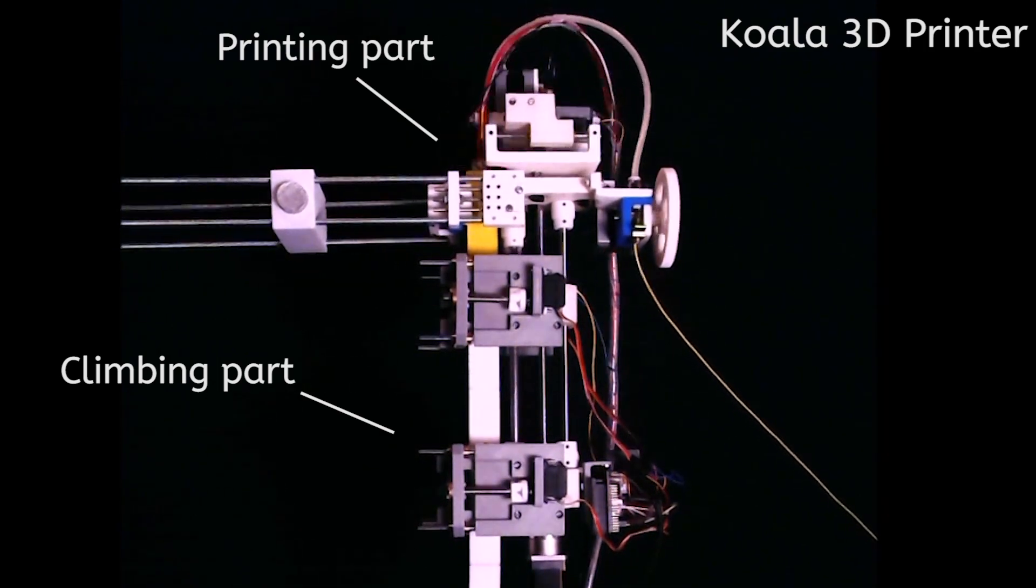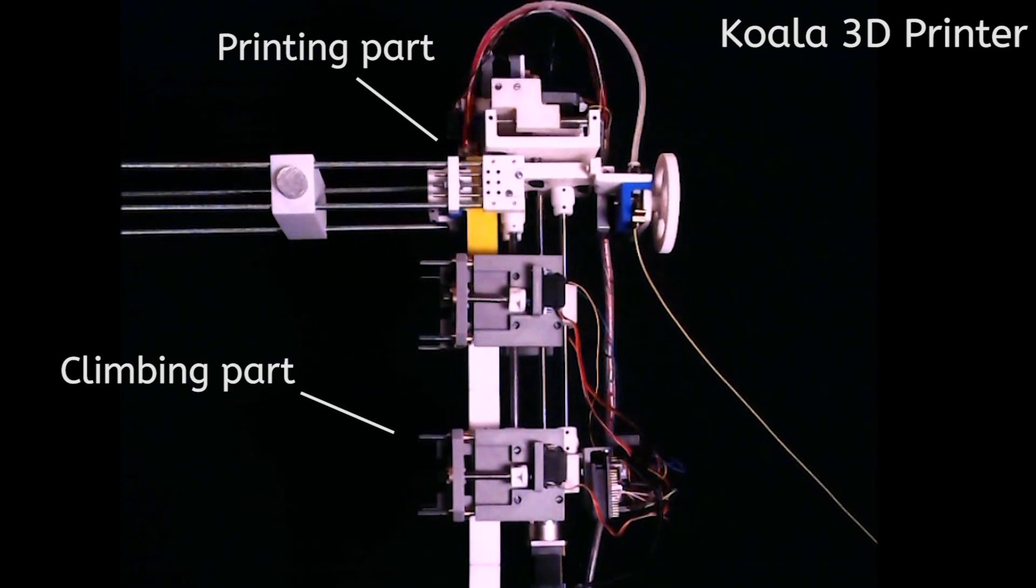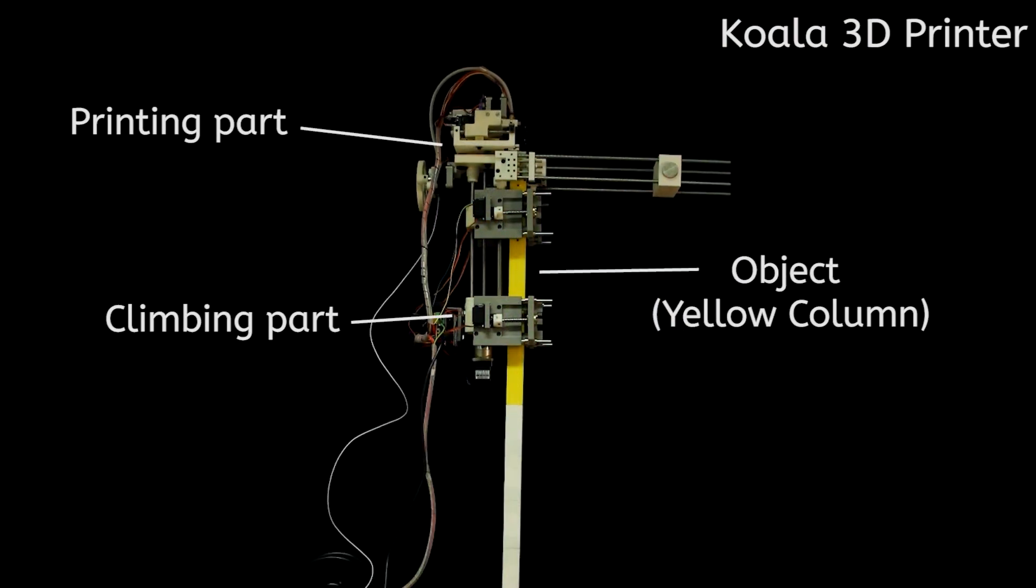The climbing stage utilizes two motorized clamps and rails that allow the machine to control the Z-axis positioning in coordination with the printing process.